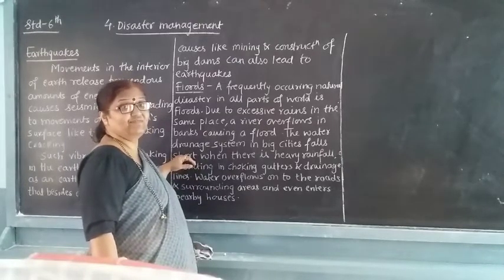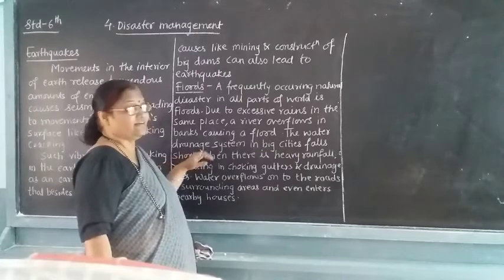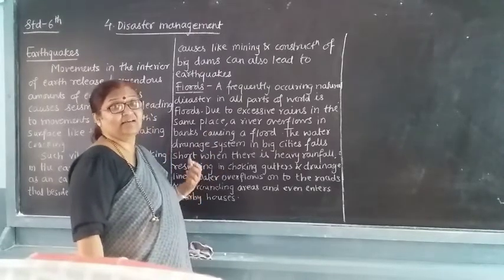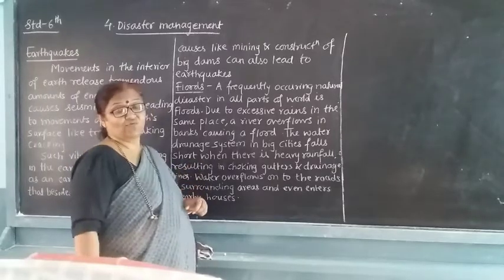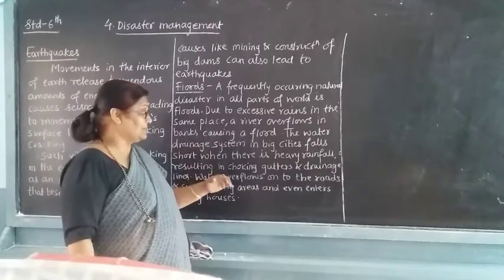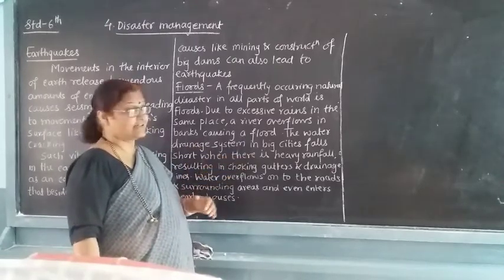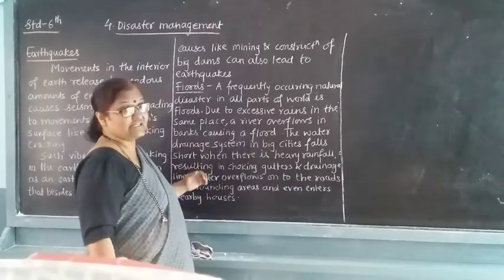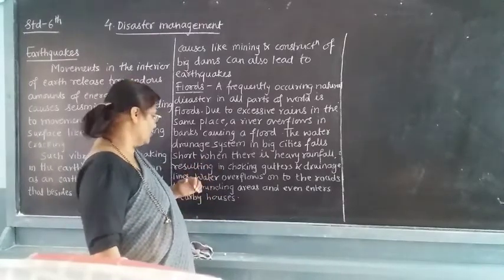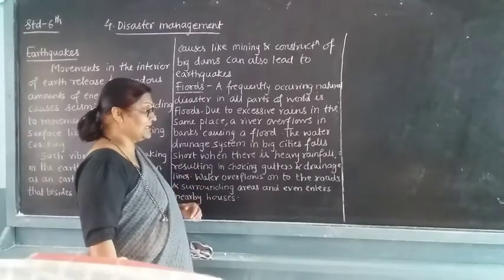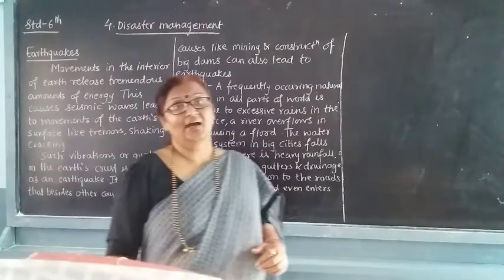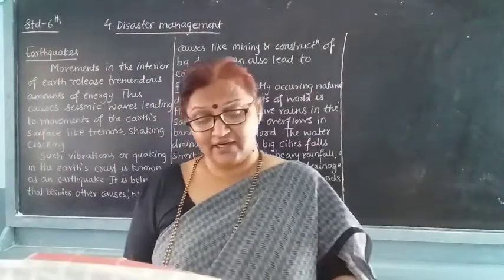The water drainage system in big cities falls short. The water drainage system fails, and when there is heavy rainfall, there are problems in the gutters — the gutters and drainage lines will choke. Water overflows on the roads and surrounding areas, and even in the nearby houses. This is caused due to the flood.